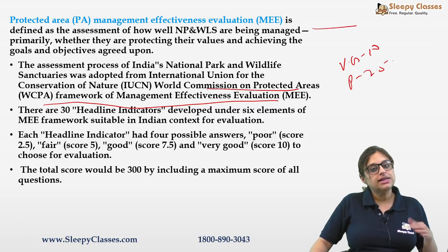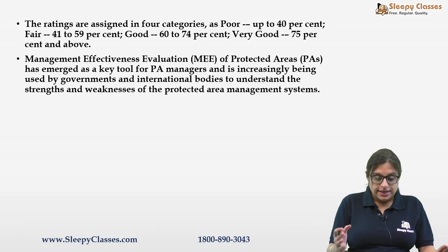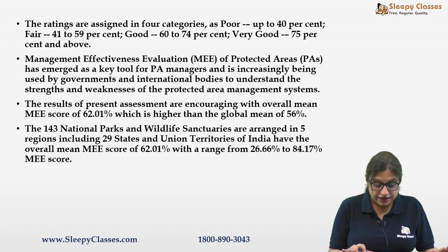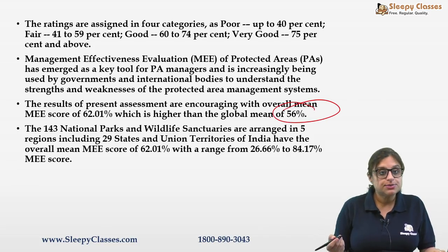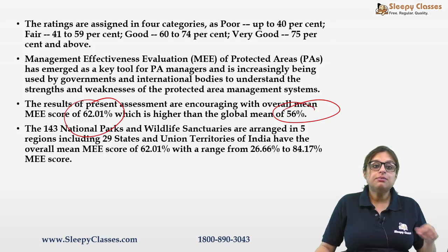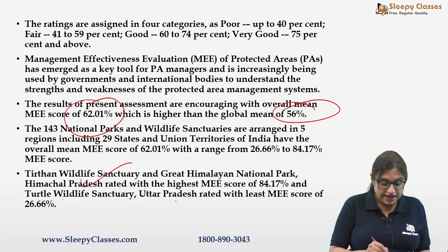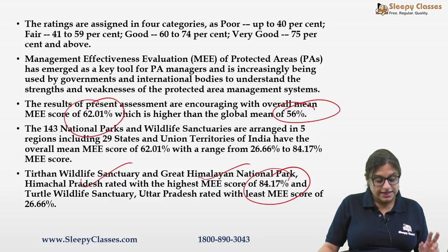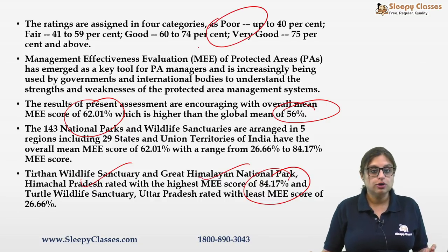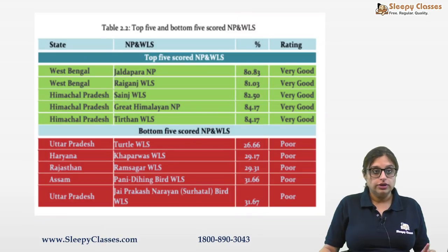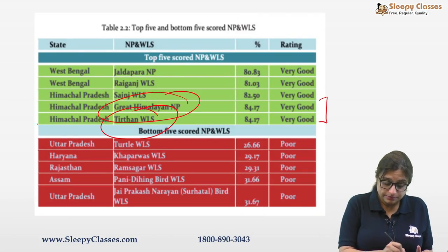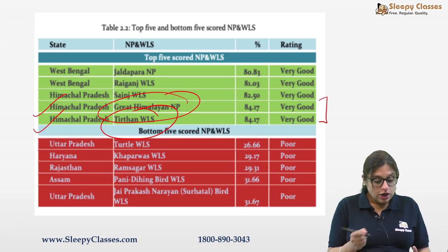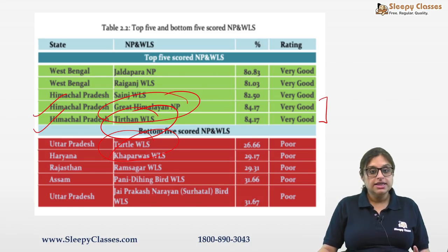Globally, the average MEE score is 56%, but India's average is 62.01% — better than the global average. The highest MEE score is 84.17%, shared by Teethan Wildlife Sanctuary and Great Himalayan National Park in Himachal Pradesh. The third-highest score also belongs to a Himachal Pradesh wildlife sanctuary. Turtle Wildlife Sanctuary in UP has the least MEE score at 26.66%, which falls in the 'poor' category (under 40%).